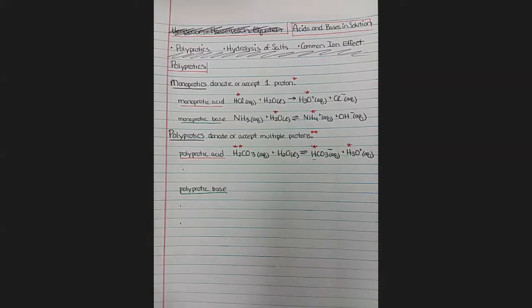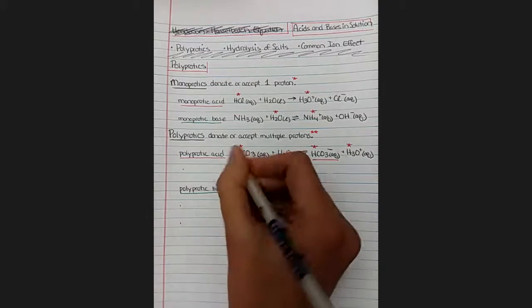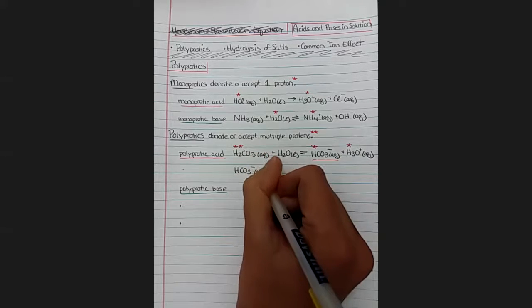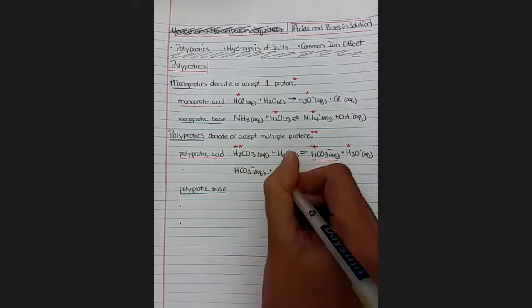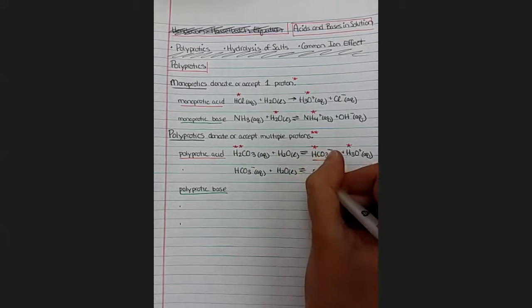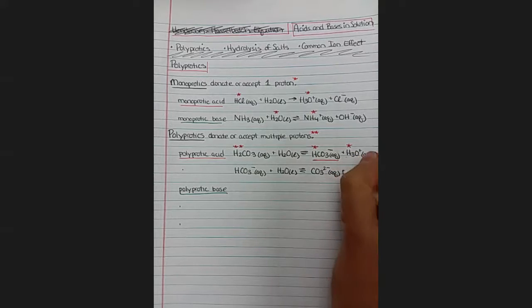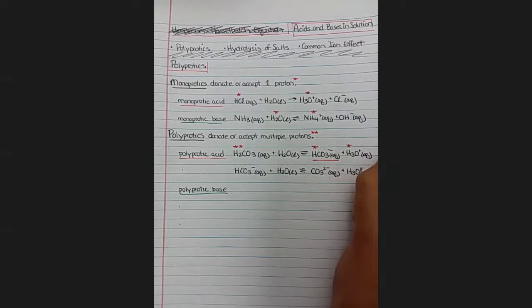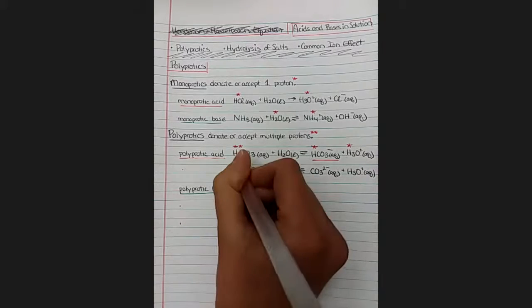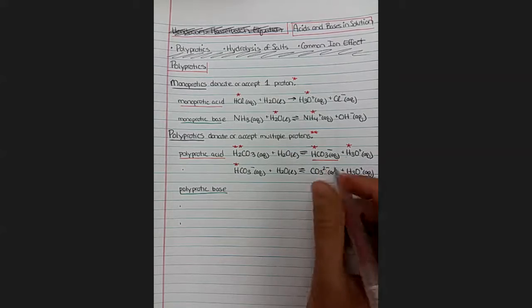And then we can take this compound that has been deprotonated once and we can donate a second proton. So we can do another acid hydrolysis with that product and donate another proton to make CO3 carbonate. So this bicarbonate still has one proton in it.